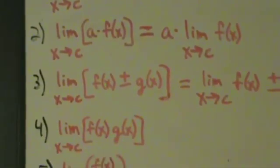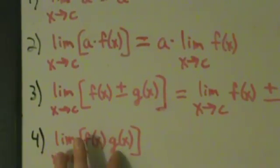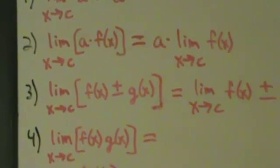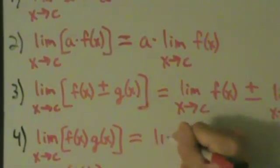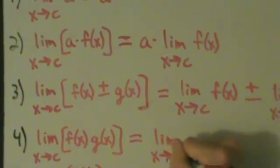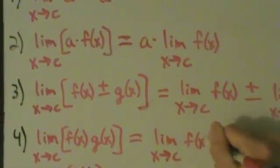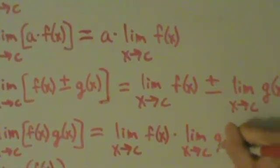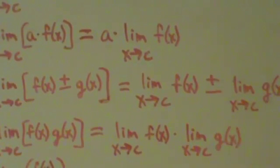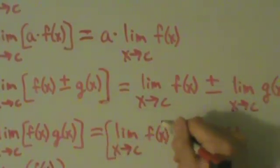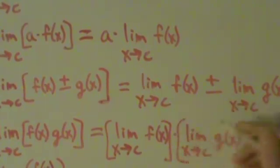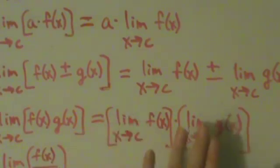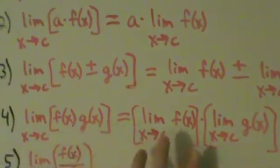Property 4: the limit as x approaches c of f(x) times g(x). Here we have a limit of a product, and this property tells us we can split it as a product of two limits: the limit as x approaches c of f(x) times the limit as x approaches c of g(x). So limit of a product equals product of the limits.